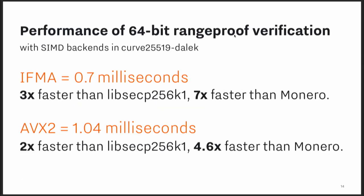We actually have extensive math documentation at the link shown here. We implemented this and ran it over a 64-bit range proof verification — basically a proof that a value is between 0 and 2^64. With an IFMA backend, it's 0.7 milliseconds. With AVX2, it's 1.04 milliseconds. So that's pretty fast. And on top of this already highly performant implementation, you can do batching and aggregation to combine multiple proofs and make them run faster together.